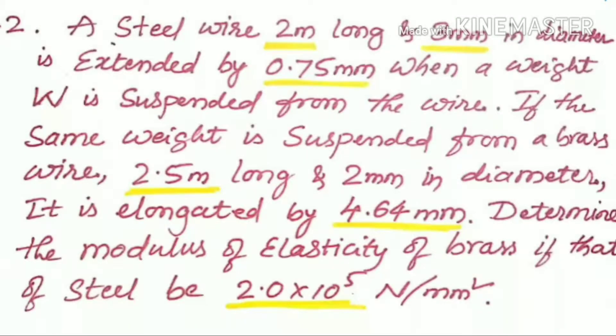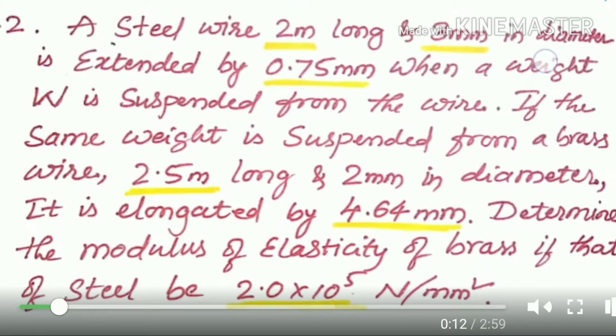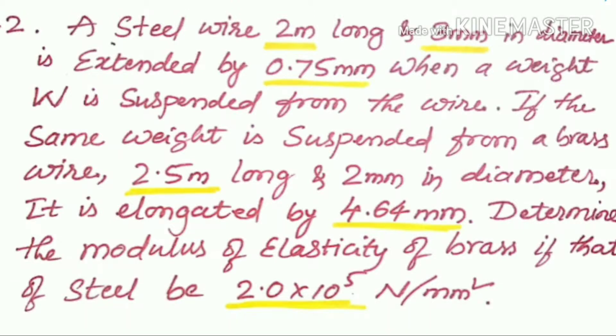A steel wire 2m long and 3mm in diameter is extended by 0.75mm when a weight W is suspended from the wire. If the same weight is suspended from a brass wire, 2.5m long and 2mm in diameter, it is elongated by 4.64mm.